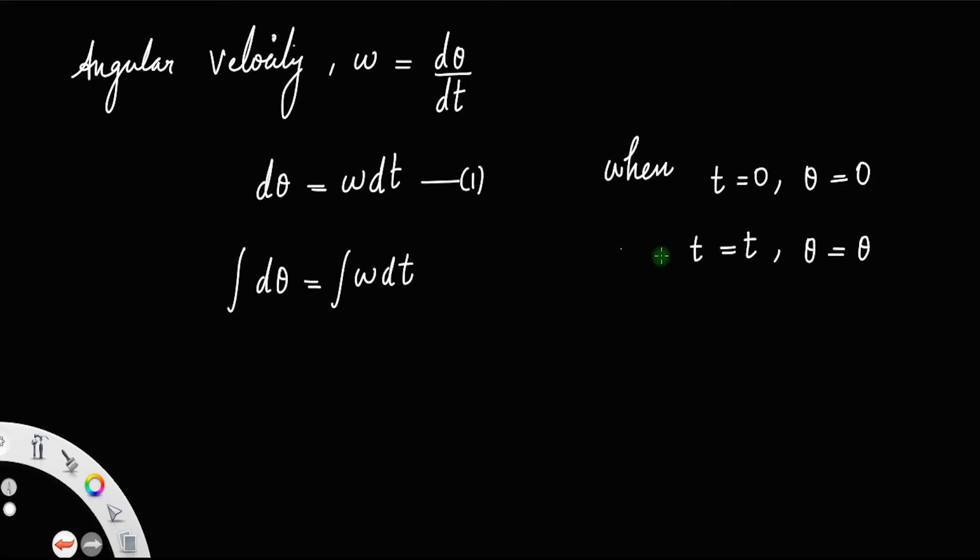The limits of the integral on the left will be 0 to θ, and since the variable is t, it is 0 to t. So, integral from 0 to θ of dθ equals integral from 0 to t...